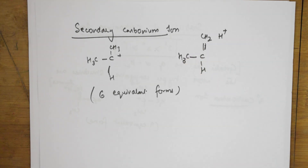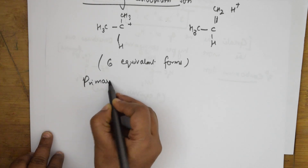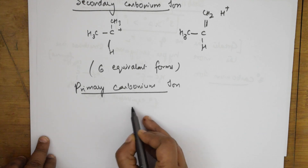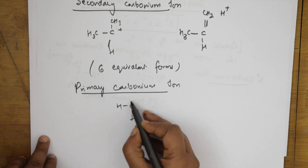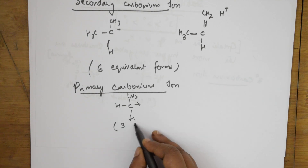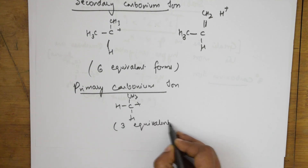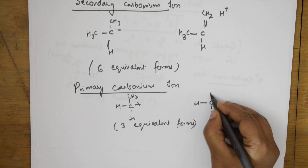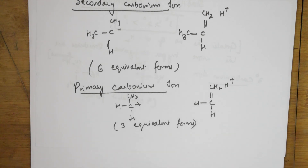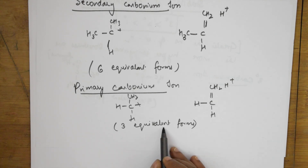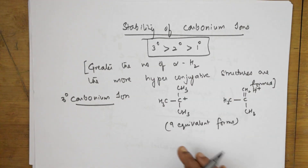For the primary carbonium ion, the primary carbon has two hydrogens and one alkyl group. How many hydrogens? Three hydrogens — so three equivalent hyperconjugation forms are formed. One form looks like: H–C double bond CH2, H+. Then two more hydrogens can shift, giving three equivalent forms in total. This explains the stability of carbonium ions — tertiary greater than secondary than primary — because there are 9, 6, and 3 equivalent forms respectively.